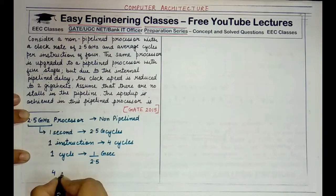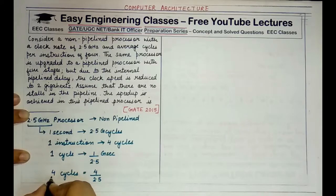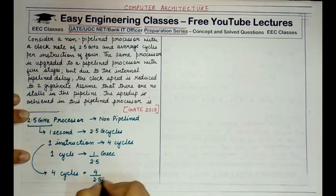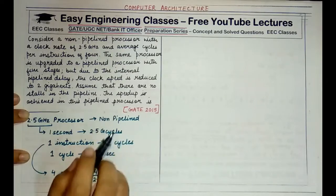Therefore, 4 cycles will be completed in 4 into 1 by 2.5 GHz. Therefore, 4 cycles or one instruction would be completed in 4 by 2.5 GHz. This was the scenario for the old processor or the non-pipelined processor.